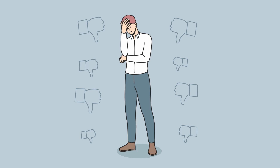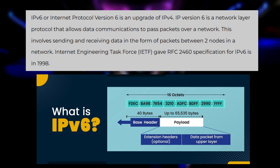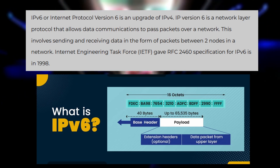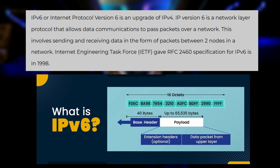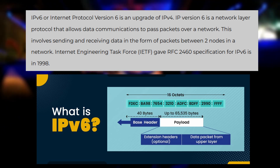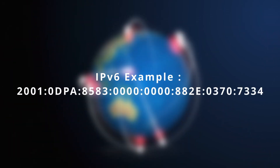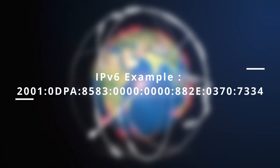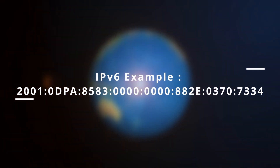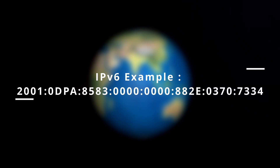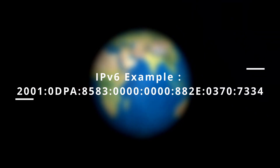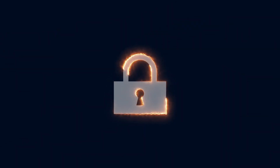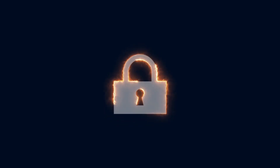That's where IPv6 comes in. IPv6 uses 128-bit addresses instead of 32, giving us a massive pool of addresses — more than we'd likely ever need. An IPv6 address looks like this: 2001:0DB8:85A3:0000:0000:0000:882E:0370:7334. They're longer and have more segments, which might seem complex, but this format is designed to future-proof our addressing system.